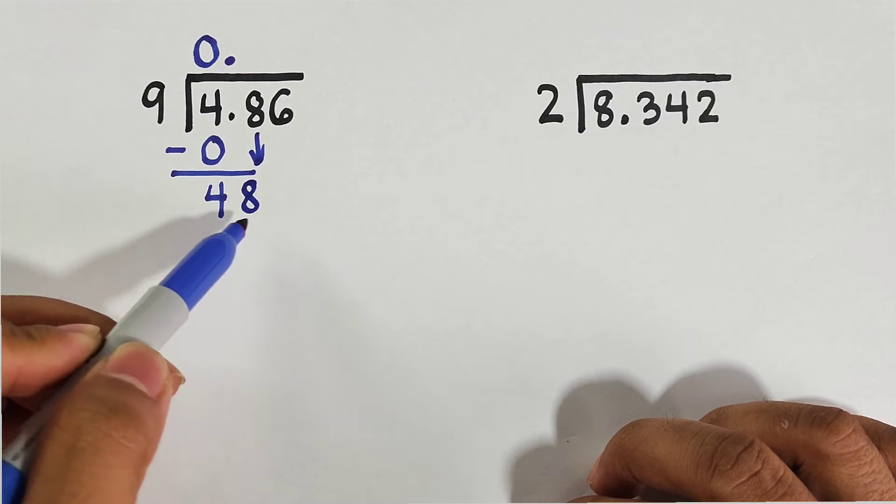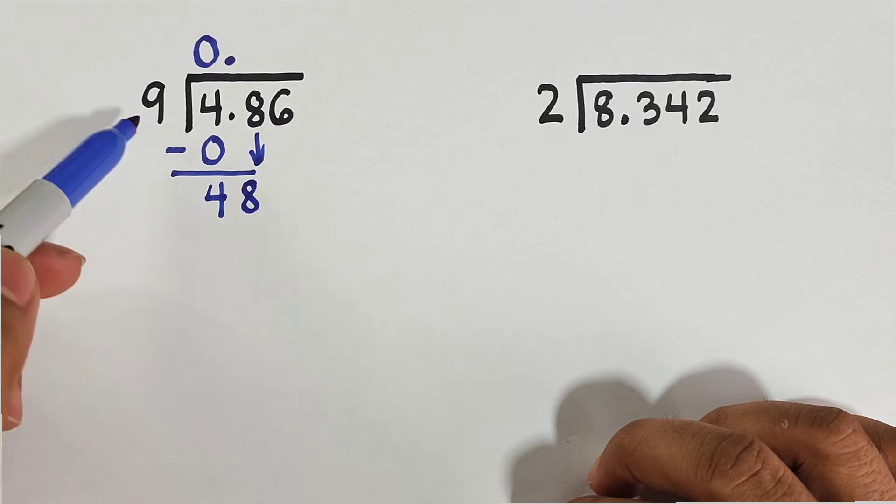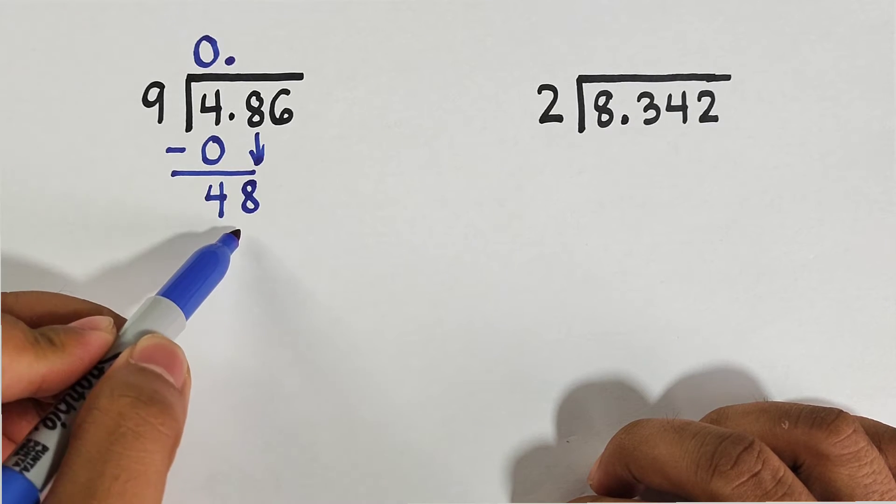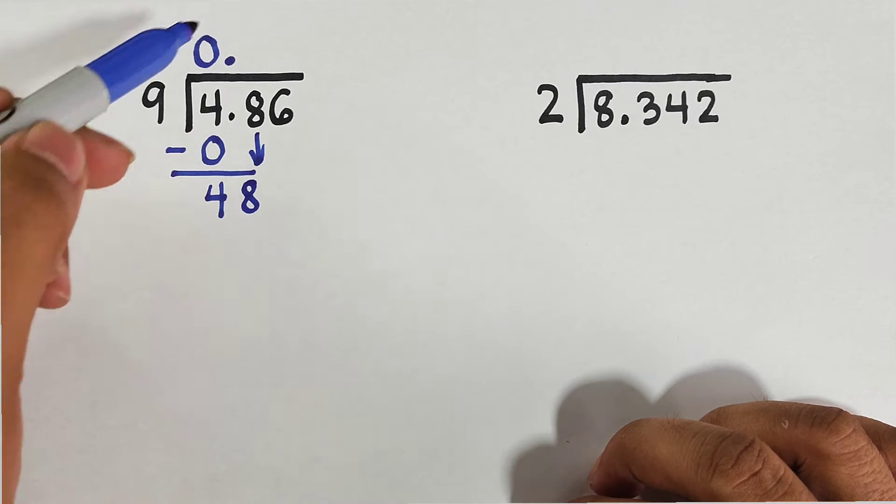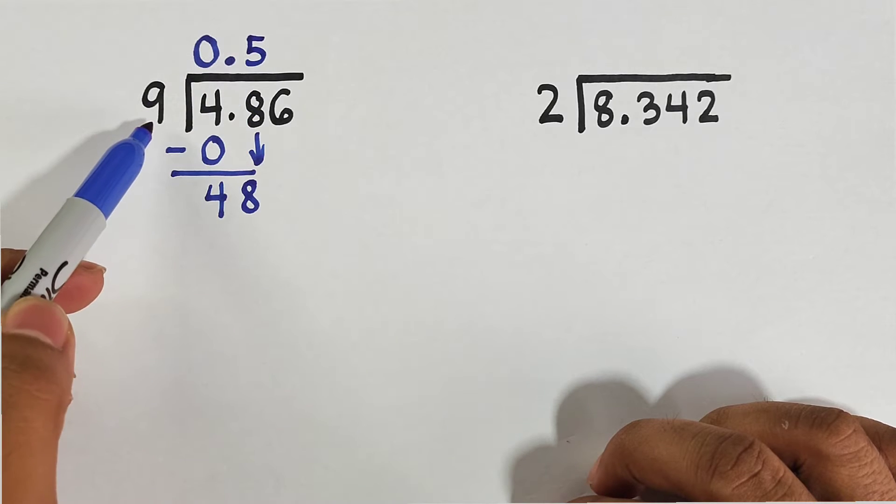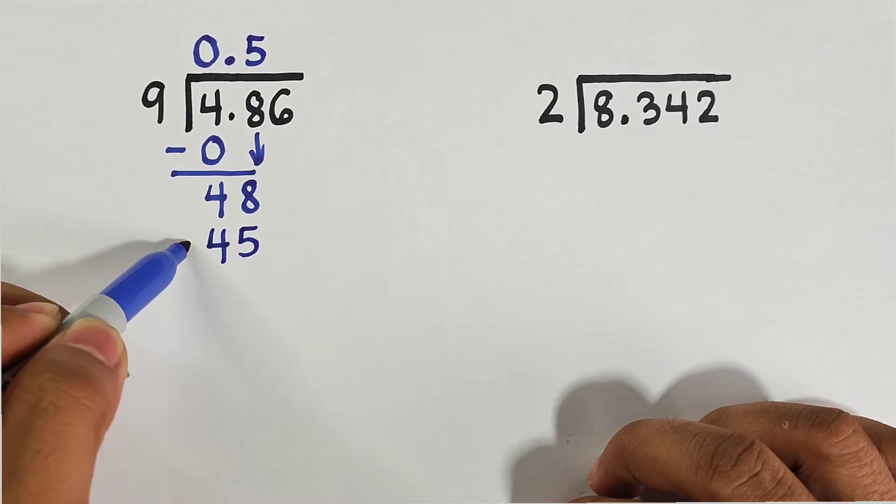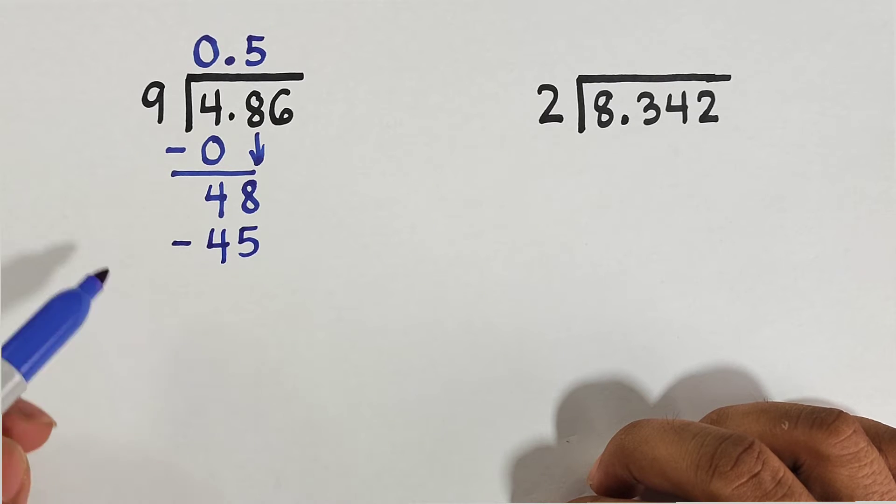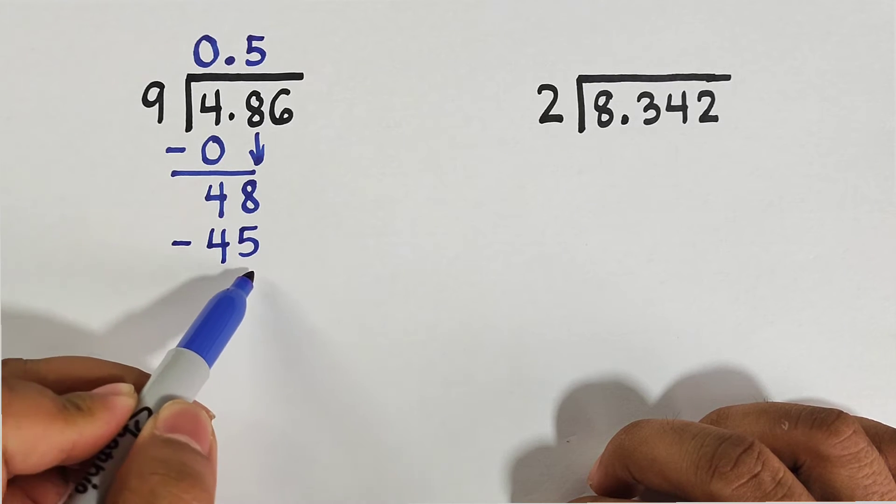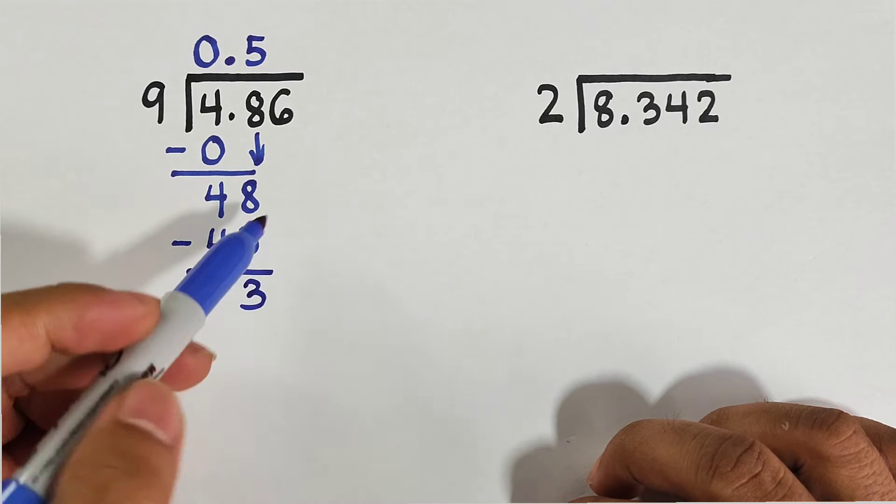Then we will bring down 8 here, so this 4 will become 48. This is our new dividend. 48 divided by 9 is equal to 5. 5 times 9 equals 45.